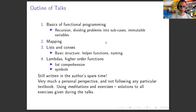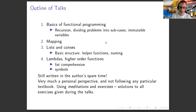This talk is the fifth one. The first one was about the basics of functional programming, where we looked at recursion, how to divide problems into smaller problems, how variables are immutable, and a little bit on types. The second talk was mostly about mapping, the third talk was about lists and cons.